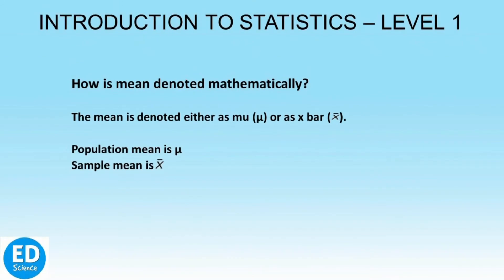The mean is denoted either as mu or x-bar. In some formulas the mean is indicated by mu, and in others by x-bar. Mu indicates the population mean and x-bar indicates the sample mean. So when you see a formula with mu, it refers to the population mean, and when you see an x-bar, the formula deals with the sample mean.